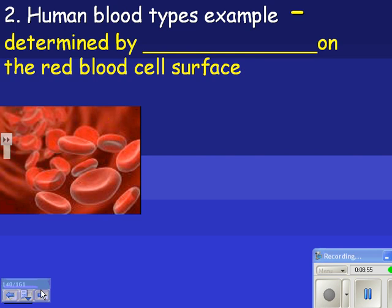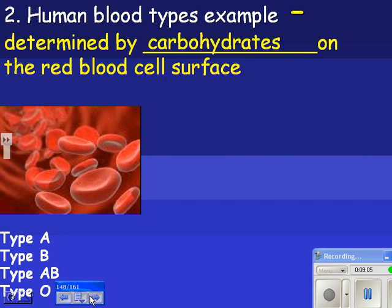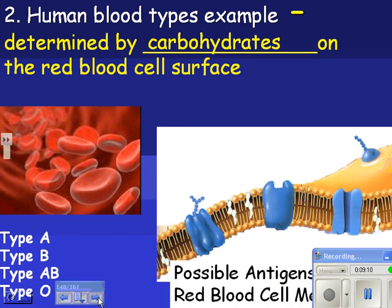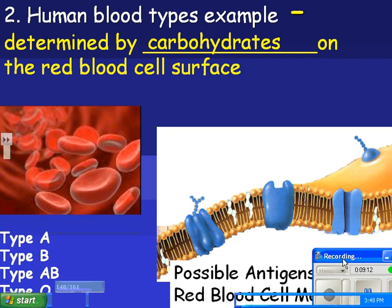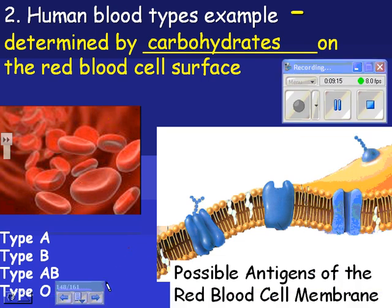Let's look at human blood types as an example. These are determined by carbohydrates that are on the red blood cell surface. There are four blood types: type A, type B, type AB, and type O. These are the possible antigens of the red blood cell membrane.